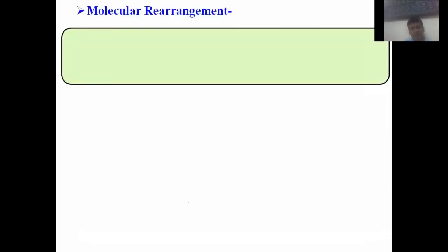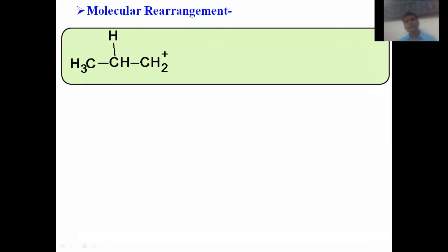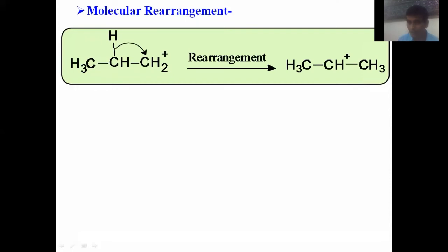Now let us see an interesting example of a rearrangement reaction — molecular rearrangement. Consider a primary carbocation. The bond between the adjacent carbon and a hydrogen atom (the alpha C–H bond) undergoes breaking, and that electron pair goes toward the electron-deficient carbon. There is a 1,2-hydride shift, converting the primary carbocation into a secondary carbocation, which we know is more stable. Therefore, a primary carbocation can easily convert into a secondary carbocation by this rearrangement.